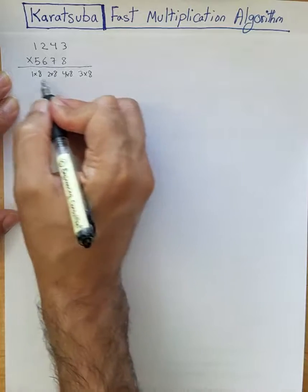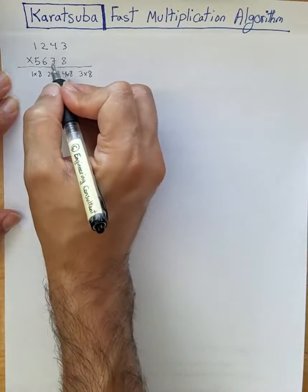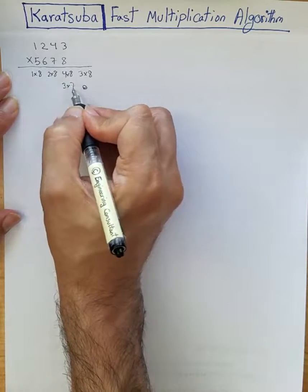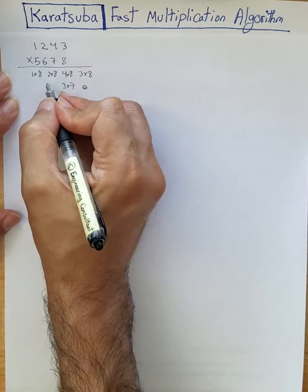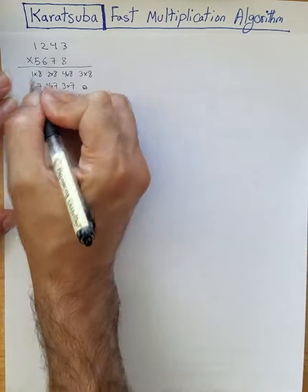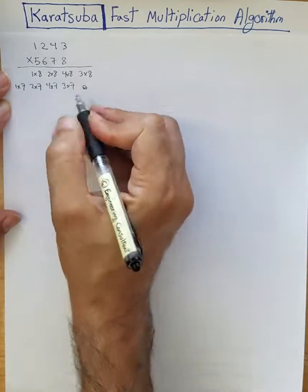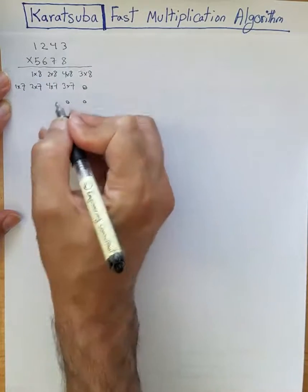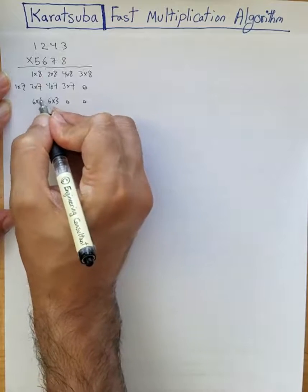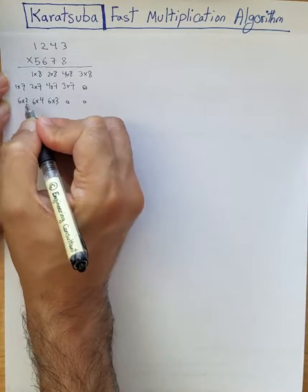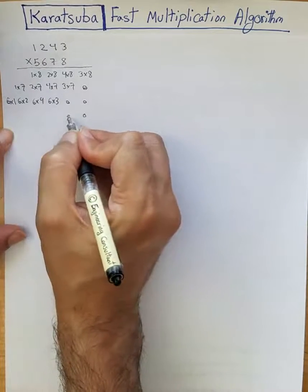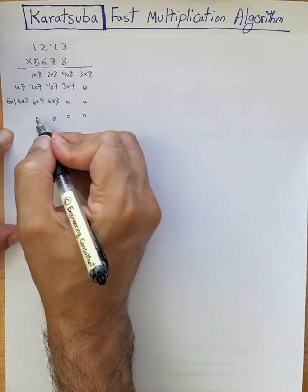That forms one number. Then for the second row, you put a 0 and compute 7 times 3, 7 times 4, 7 times 2, and 7 times 1. You continue this — for the next row: 6 times 3, 6 times 4, 6 times 2, 6 times 1. And for the next you put another 0, then 5 times 3, and so on.